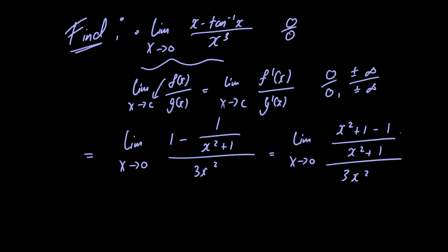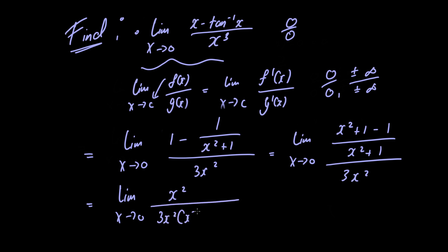Now if we multiply the numerator and the denominator by x squared plus 1, we're left with the limit as x approaches 0 of x squared divided by 3x squared multiplied by x squared plus 1.